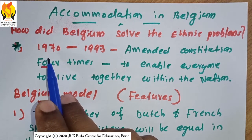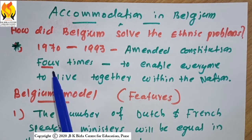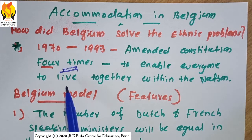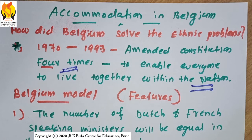From 1970 to 1993, the government of Belgium amended the constitution four times to enable everyone to live together within the nation. Even though the Dutch and French had differences, the government was very vigilant in resolving the problems and gave high importance to resolving the conflict — with that purpose, the government amended the constitution four times.